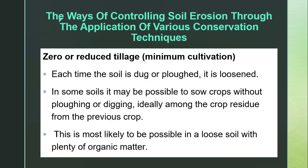The other method is zero or reduced tillage, also called minimum cultivation. Each time the soil is dug or plowed it is loosened. In some soils it may be possible to sow crops without plowing, ideally among the crop residue from the previous crop. This is most likely possible in loose soil with plenty of organic matter. Zero or reduced tillage is important to reduce tearing up soil particles and exposing them to erosion agents.